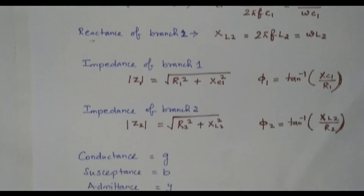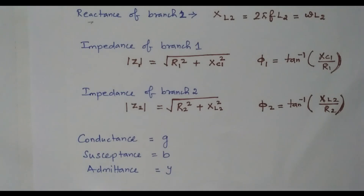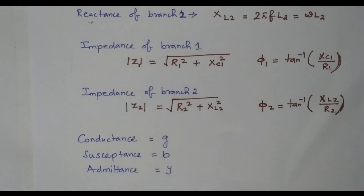Now we will go over three terms: conductance, susceptance, and admittance. Conductance is the reciprocal of resistance. Resistance opposes the flow of current, whereas conductance allows the flow of current. Susceptance is the reciprocal of reactance. Reactance also opposes the flow of current, while susceptance allows it. Admittance is the reciprocal of impedance.